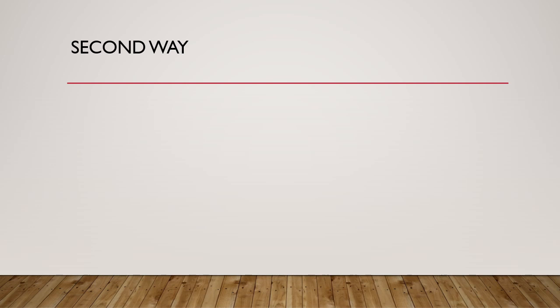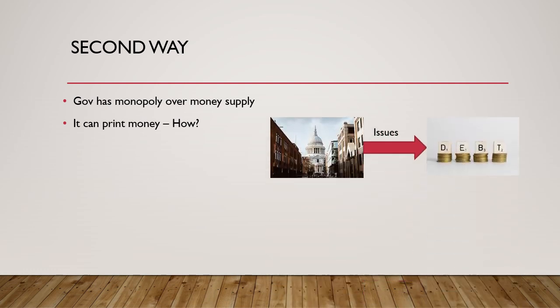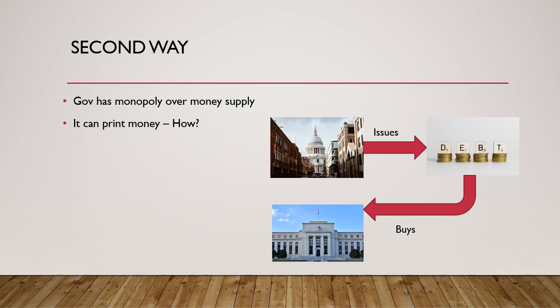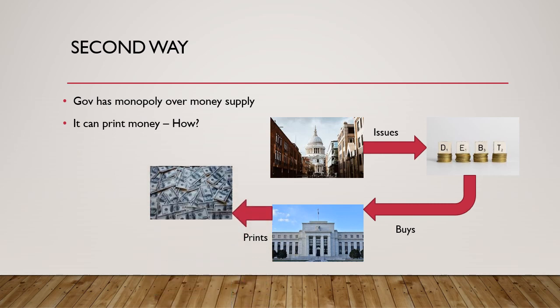In the second way to fund fiscal deficit, since the government has a monopoly over money supply, it can print money. The government issues debt, which is then bought by central banks — the central bank can buy that government debt directly from the government, but usually it does so indirectly through private players by printing and issuing fresh money, which is then deposited with the federal government, funding its fiscal deficit. In modern context, this is called QE, or quantitative easing.